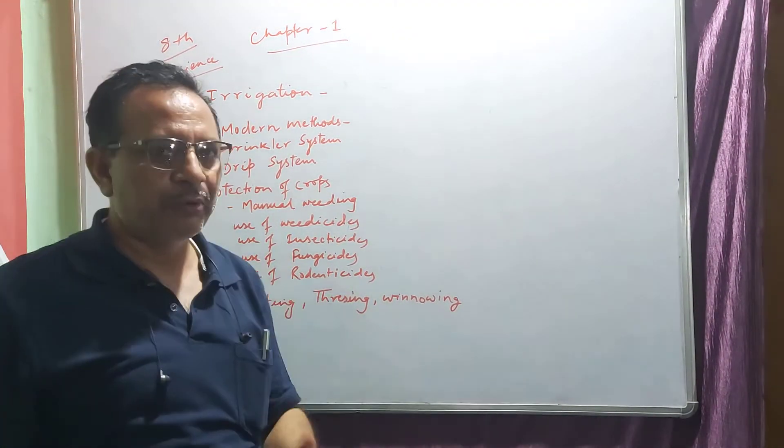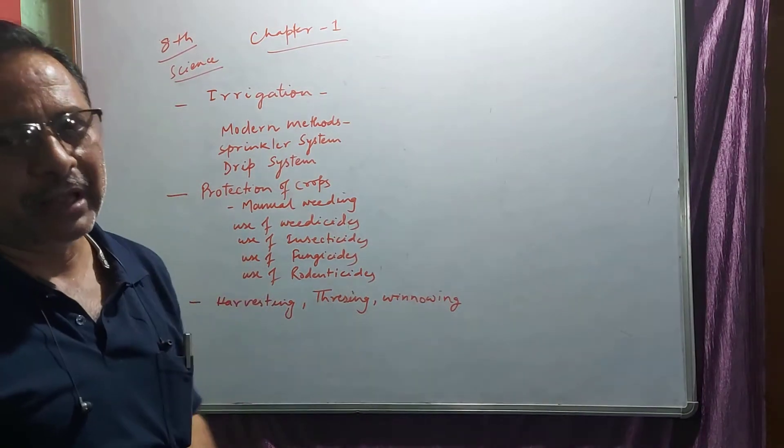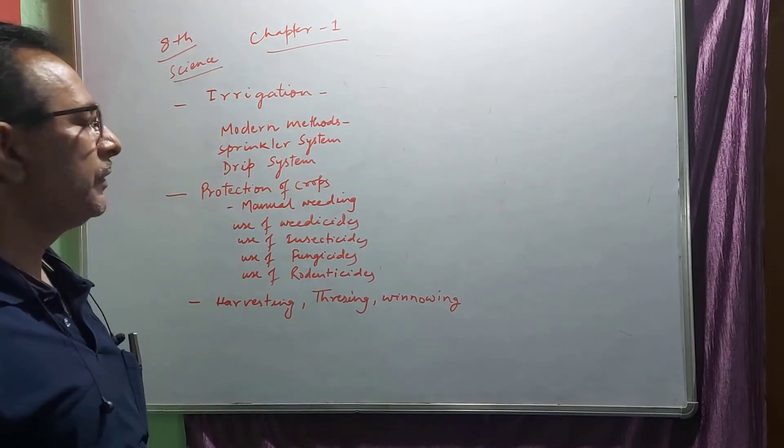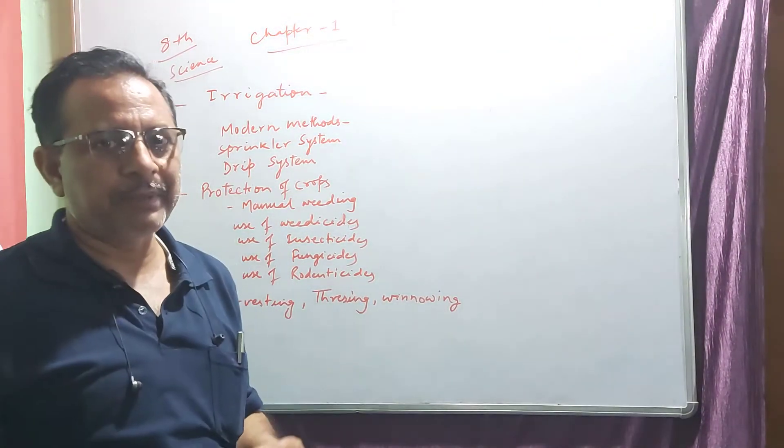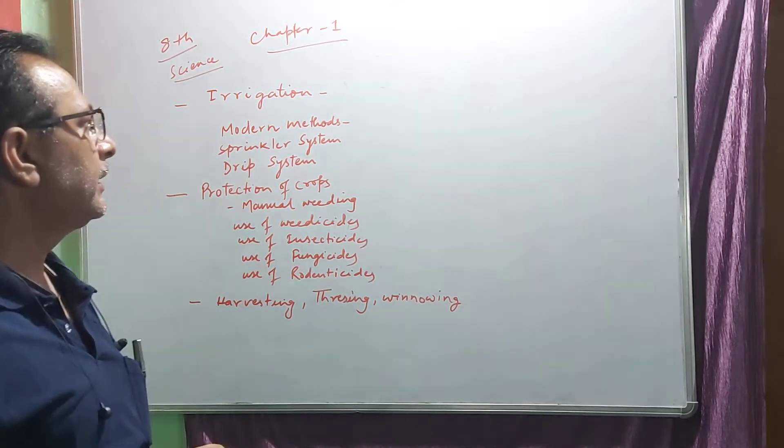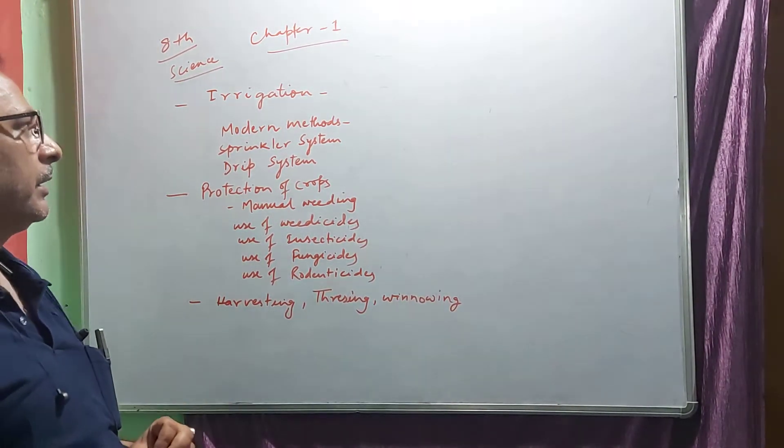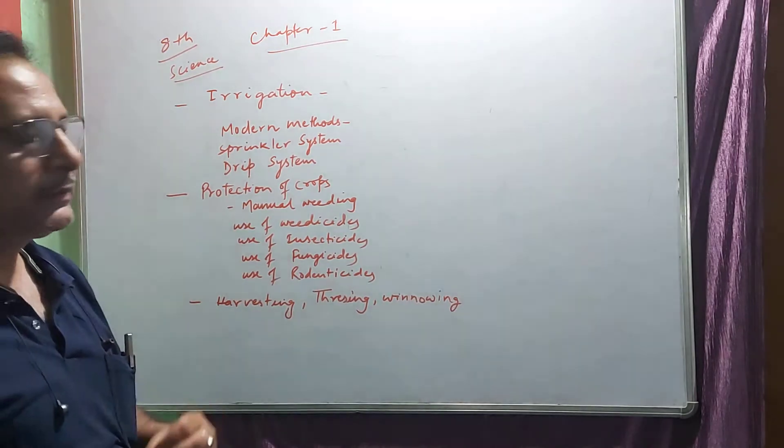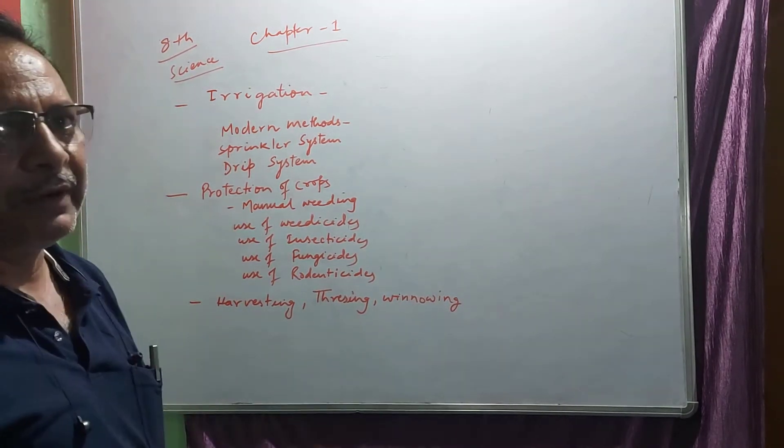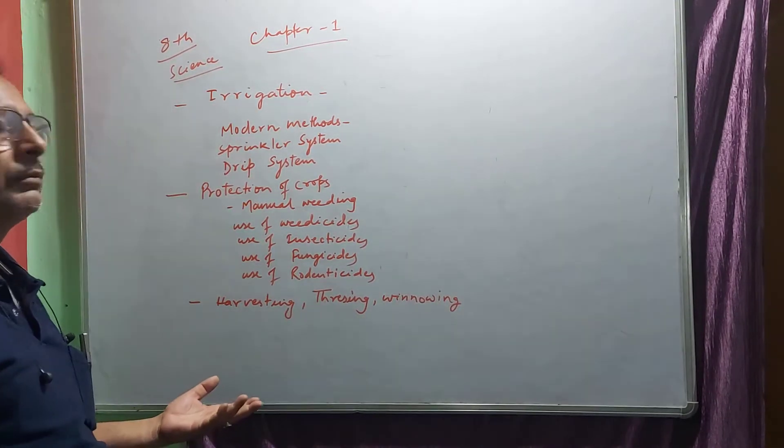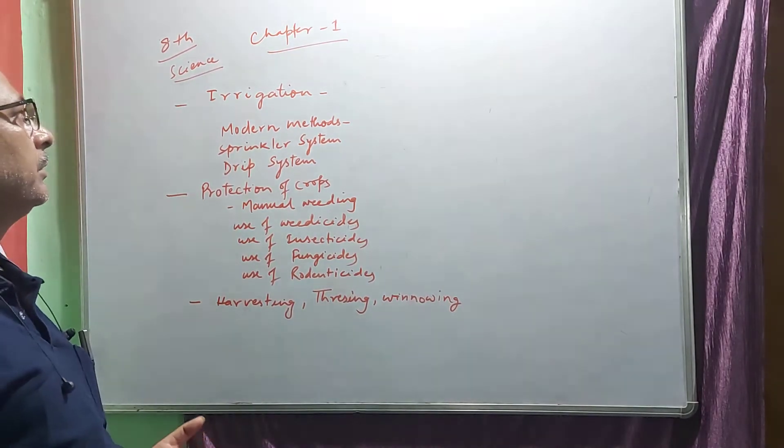When we use manure or fertilizer to add water to the plants to grow plants, to add water in the field for the growth of plants, this is called irrigation.